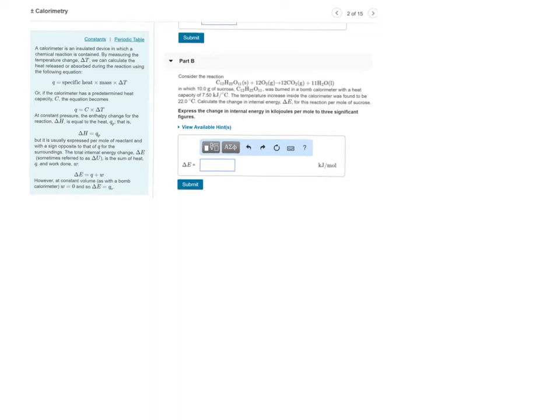All right, let's take a look at this question. Consider the reaction shown here, in which 10 grams of sucrose was burned in a bomb calorimeter with a heat capacity of 7.5 kilojoules per degree Celsius. The temperature increase inside the calorimeter was found to be 22 degrees Celsius. Calculate the change in internal energy for this reaction per mole of sucrose.